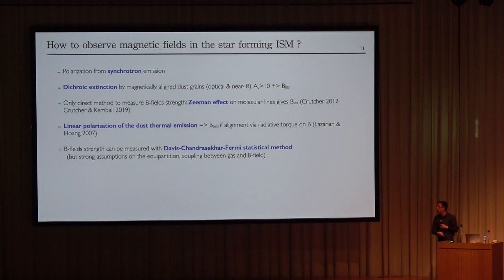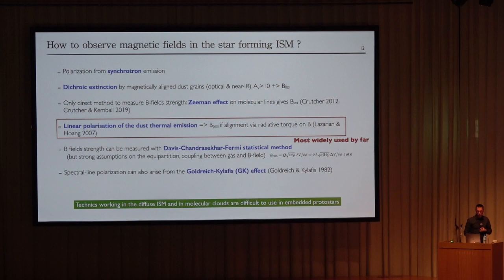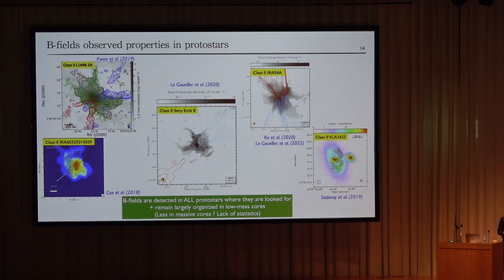A last way to observe magnetic fields is to use the Goldreich-Kylafis effect, which gives information using spectral line polarization. Today, the most widely used technique for collapsing protostars is linear polarization of dust emission. All other techniques suffer from the fact that the protostellar core is collapsing with a massive embedded envelope.